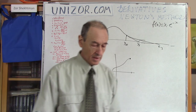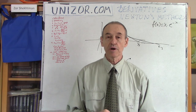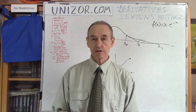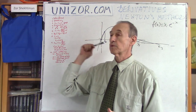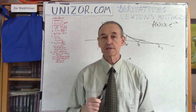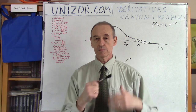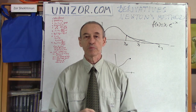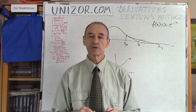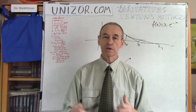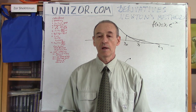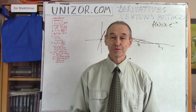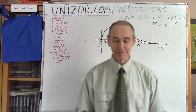That's it. This is all I wanted you to know about Newton's method of finding zeros of a function. I suggest you go to the website and read all the notes for this lecture — they are a little more precise and detailed than what I've been talking about. Good luck. Thank you.